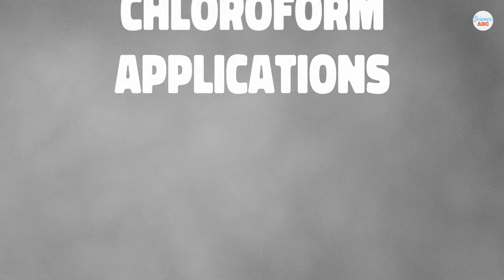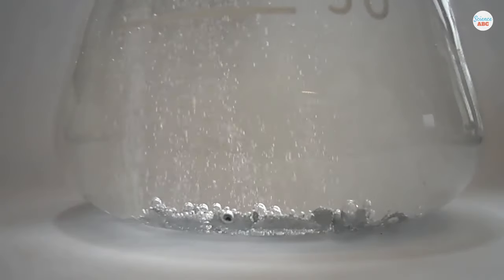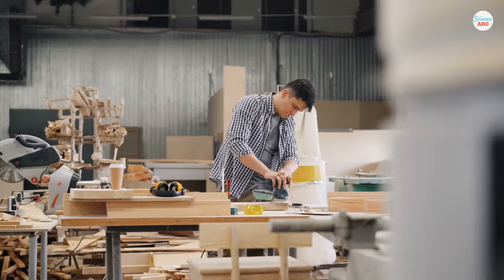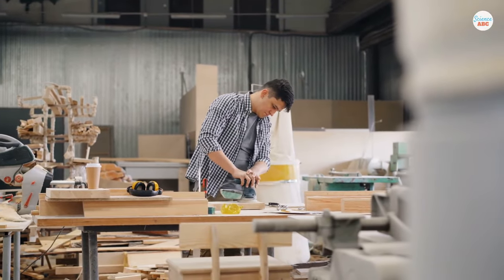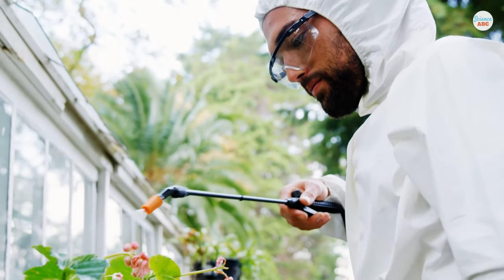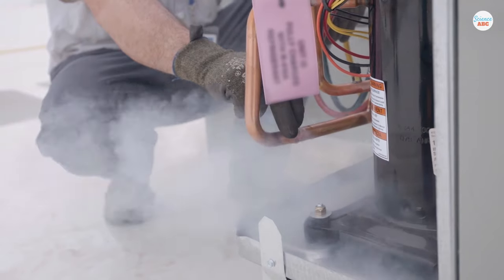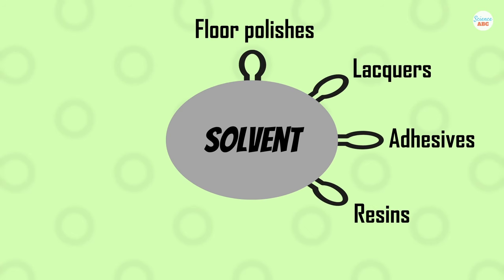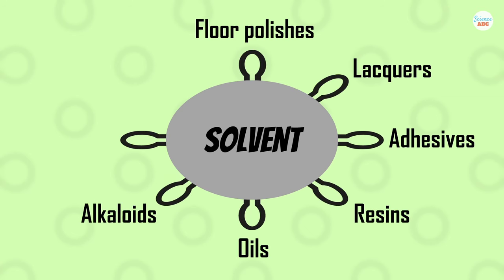There are a number of common uses for chloroform. One, chloroform is often used as a solvent in the chemical production of compounds. Two, it is used in paper, construction, and woodworking industries. Three, it is used in pesticide and film production. Four, chloroform is used to produce a refrigerant called fluorocarbon 22. Five, chloroform is used as a solvent in floor polishes, lacquers, adhesives, resins, oils, alkaloids, baths, and rubber.